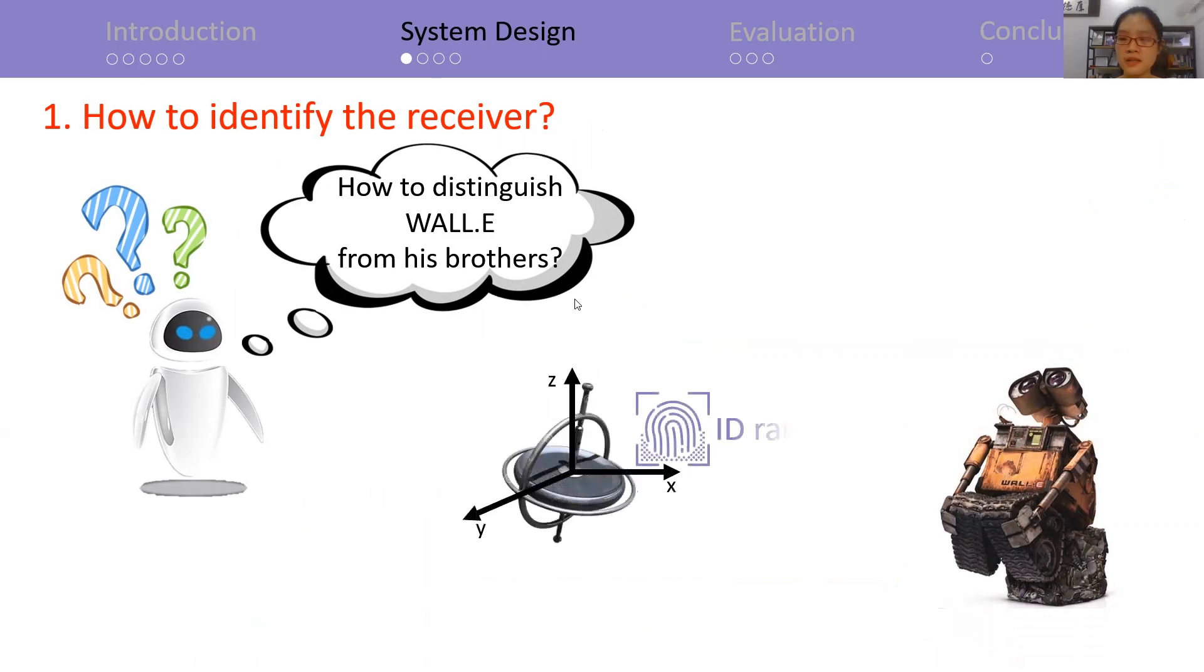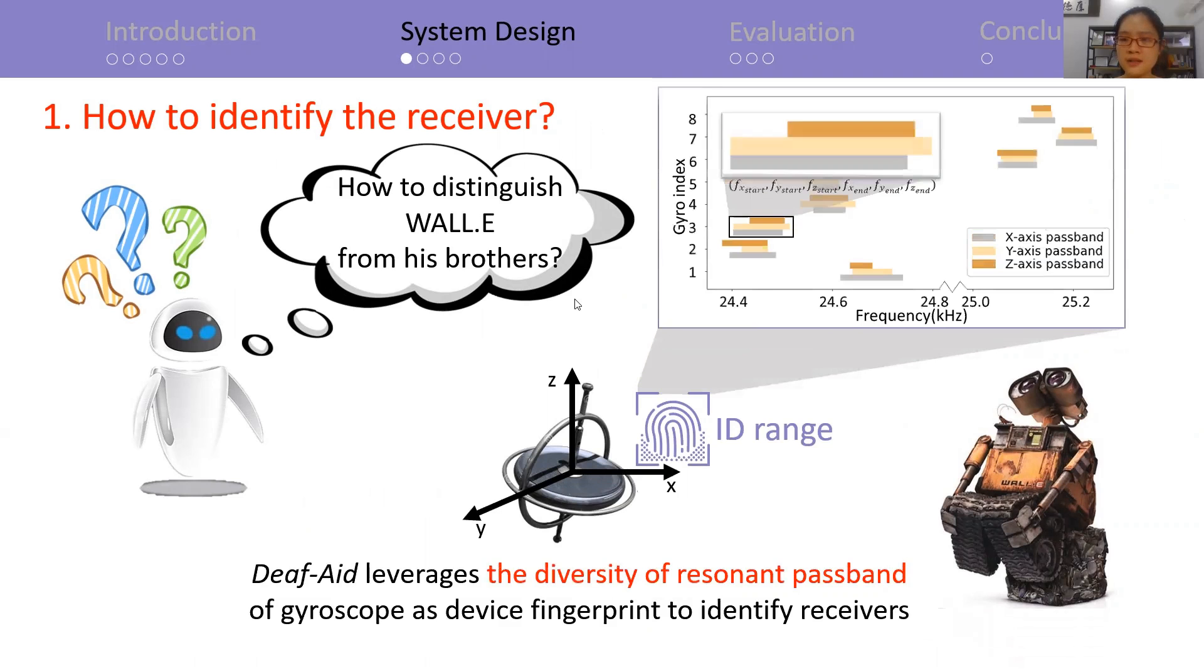We propose a new device fingerprint, the ID range, to help EVE identify WALL-E from other devices. It is extracted from the diversity of resonant pass-bands of gyroscope at WALL-E. Our experiments show that jointly using them to generate a device fingerprint will lead to 96% accuracy in identifying the receivers.